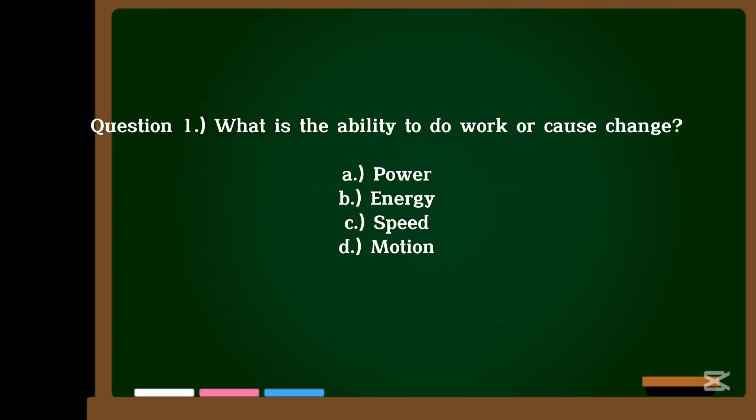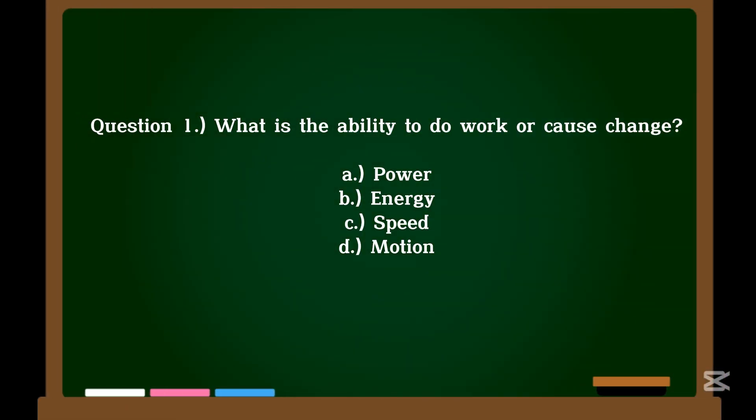Question 1. What is the ability to do work or cause change? A. Power. B. Energy. C. Speed. D. Motion.